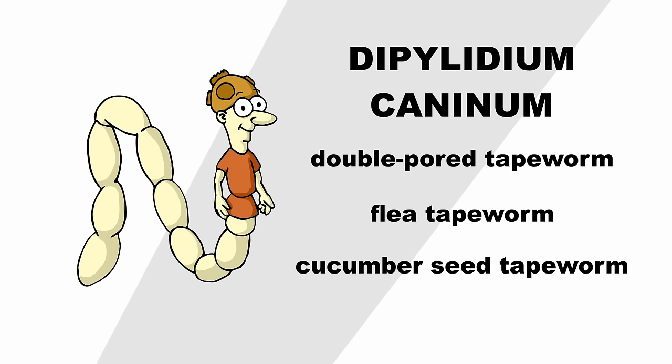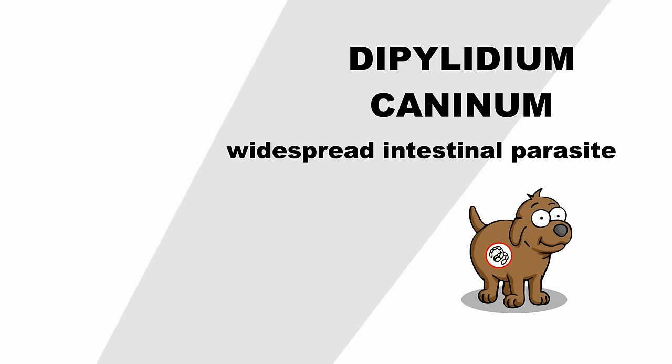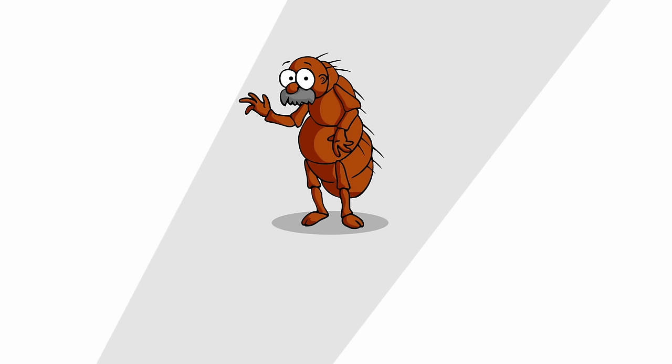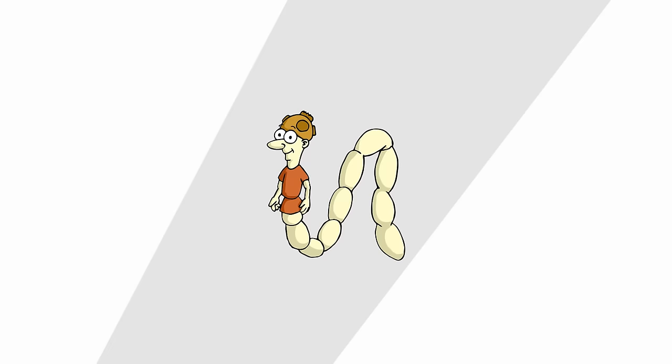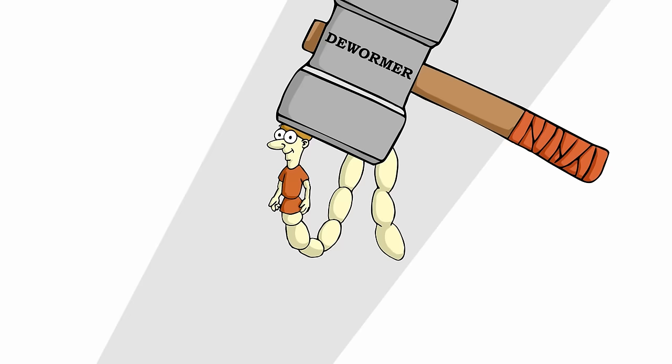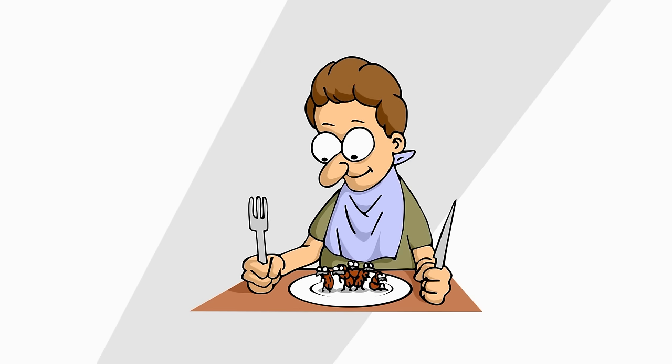To sum up. The cucumber seed tapeworm is an intestinal parasite of dogs, cats and even humans. Fleas are their intermediate hosts, so wherever you find a worm, you will find fleas nearby. Treating the infection happens with dewormers, but prevention requires flea control. Also, please don't eat fleas, it's silly.